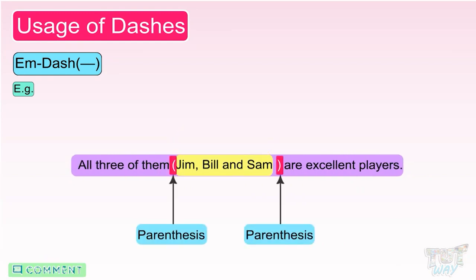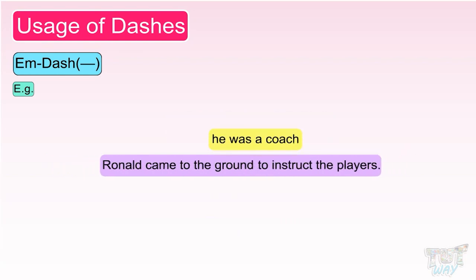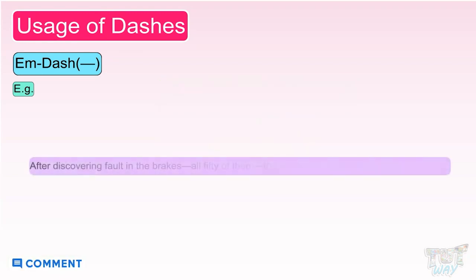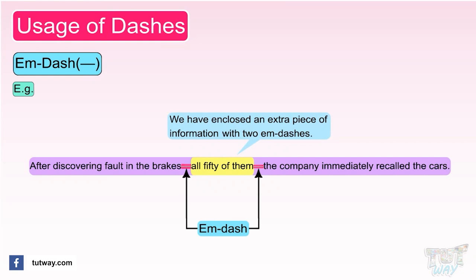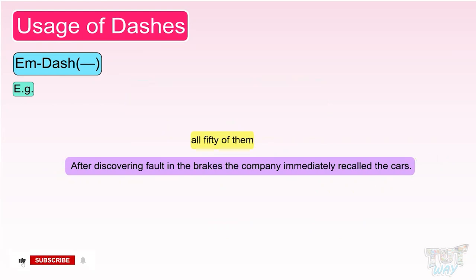The same thing could have been done using parenthesis. 'Ronald came to the ground—he was a coach—to instruct the players.' Here again, we have used M dashes to enclose extra information which can be removed without changing the meaning: 'Ronald came to the ground to instruct the players.' 'After discovering fault in the brakes—all 50 of them—the company immediately recalled the cars.' Here again, the extra piece of information 'all 50 of them' is enclosed with two M dashes, and the same thing could have been done using parenthesis.